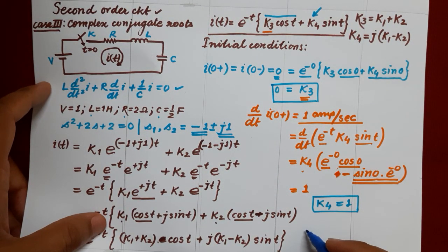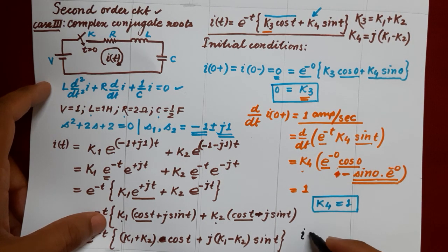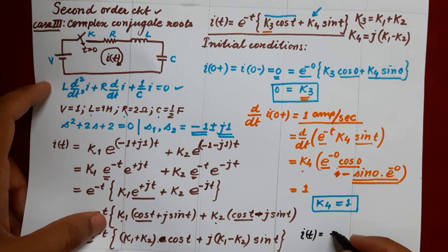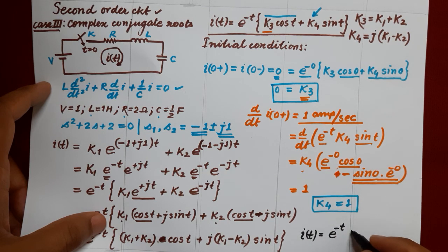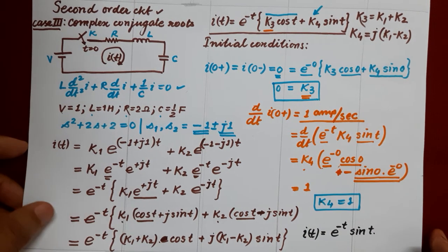So our solution is i(t) equal to e to the power minus t times sin t.